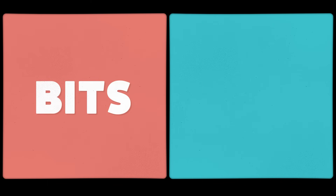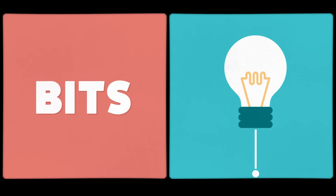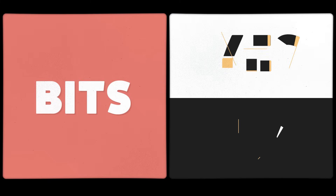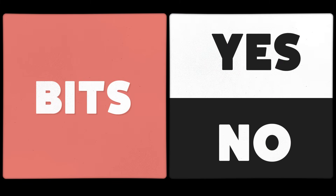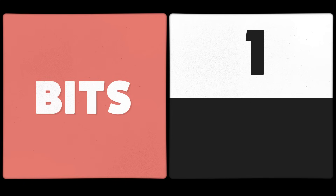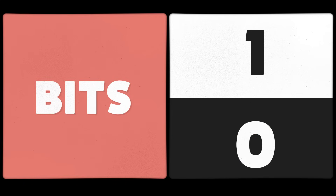Information is made of bits. A bit can be described as any pair of opposites — on or off, yes or no. We typically use a one, meaning on, or a zero, meaning off. Because a bit has two possible states, we call it binary code.